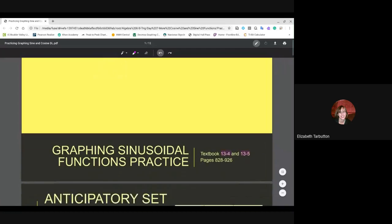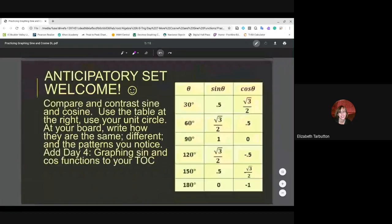For your anticipatory set today, I want you to compare and contrast the sine and the cosine using the table here. You can also use your unit circle. I want to know how the patterns are the same, how they might be different, and then you can add to your graphing notebook. You might want to pause while you add that in.